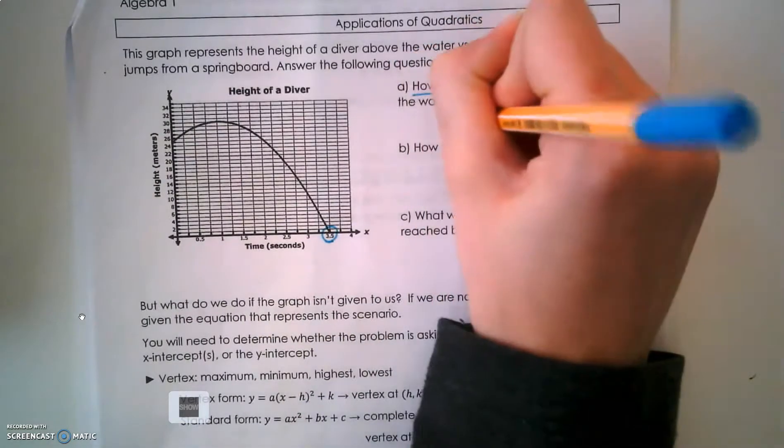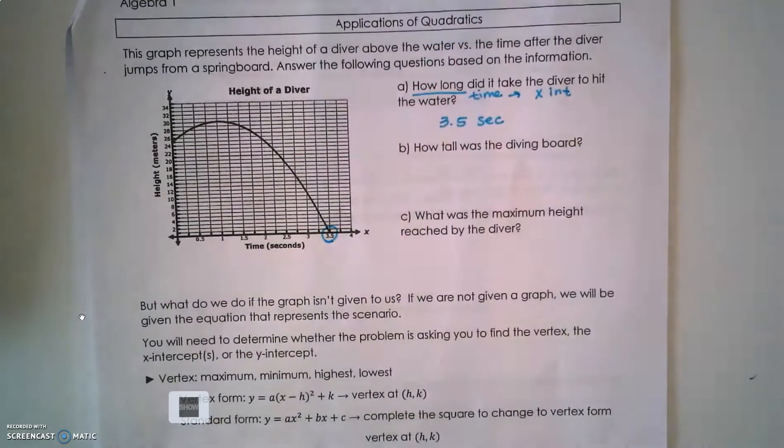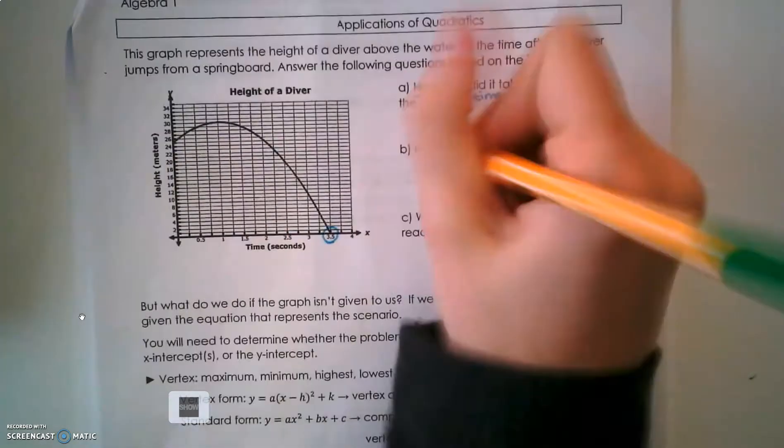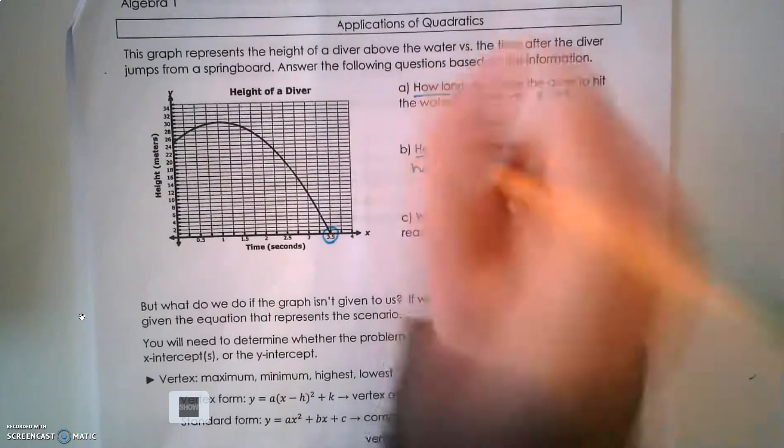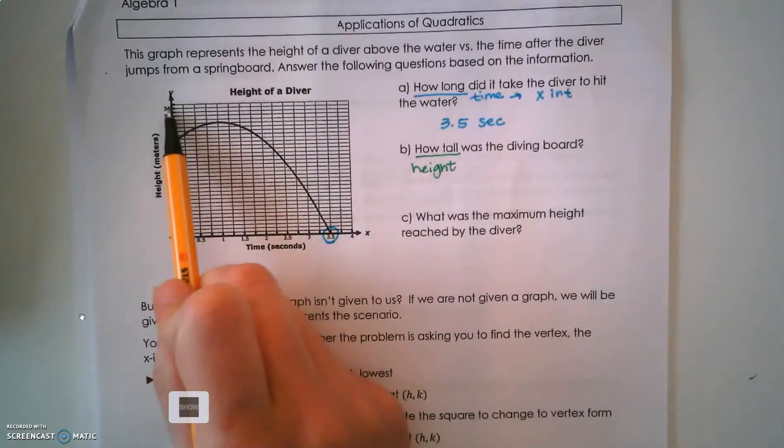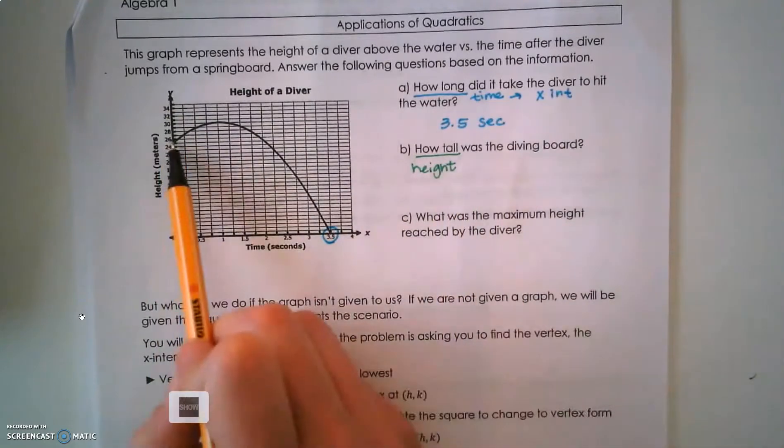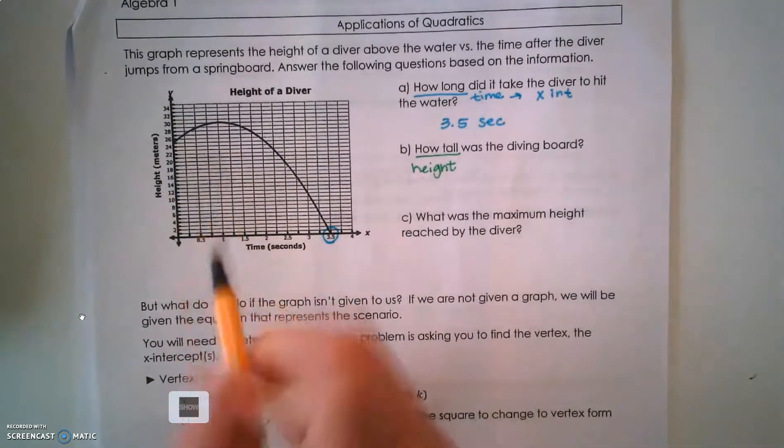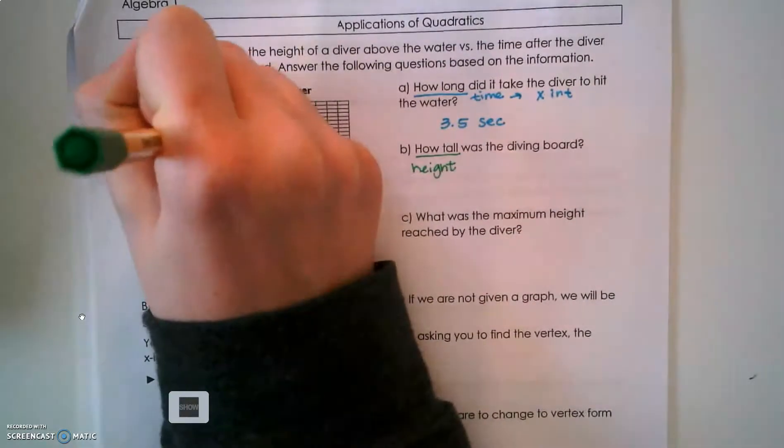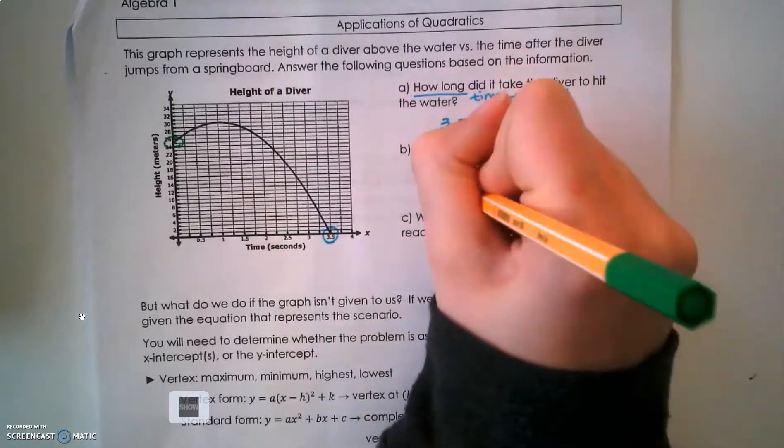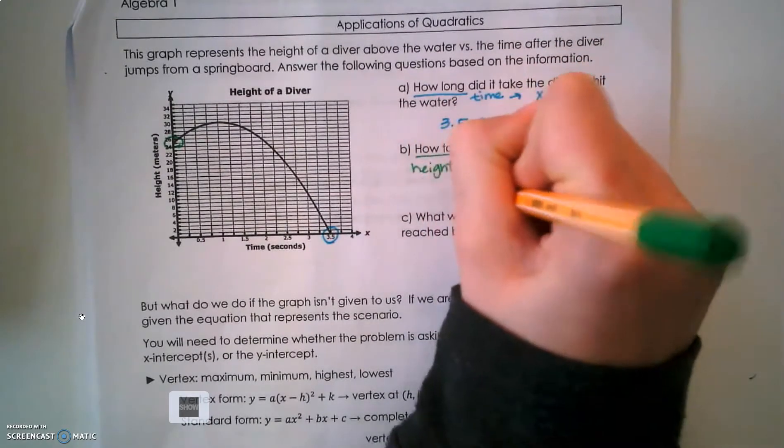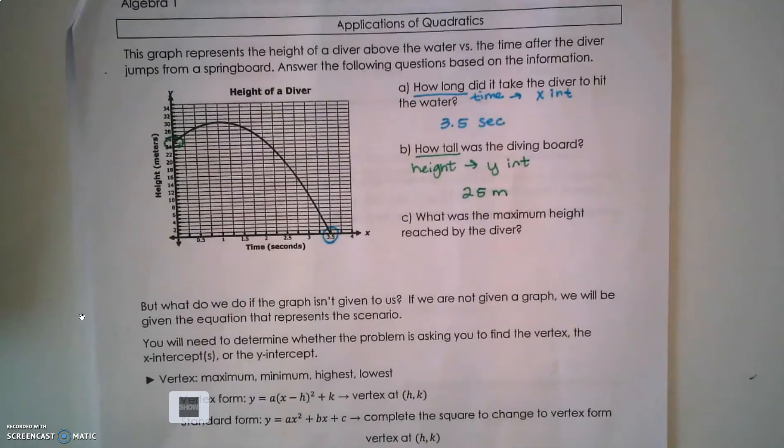How long did it take the diver to hit the water? 3.5 seconds. How tall was the diving board? That's a height on the y-axis. How tall is the diving board we're jumping off? That's going to be my y-intercept, and that looks to be at 25 meters.